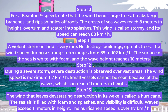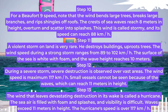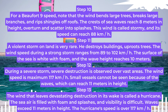Step 12. During a severe storm, severe destruction is observed over vast areas. The wind speed is maximum 117 km/h. Small vessels cannot be seen because of the waves, which can reach 11 m in height.